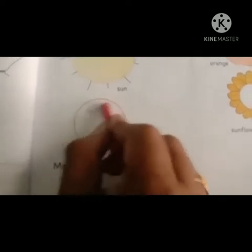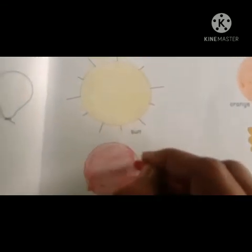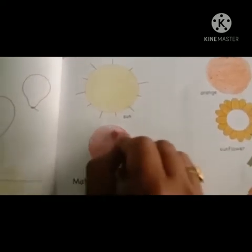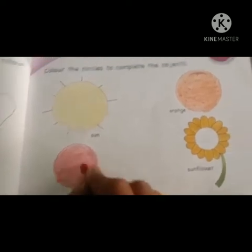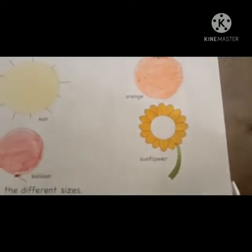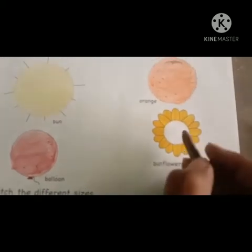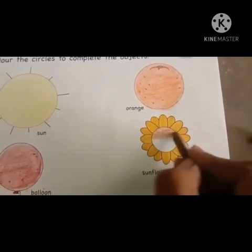Next, a bit of balloon. Fill the color. Balloon in red color. Next, a bit of sunflower. Complete the flower in brown color.